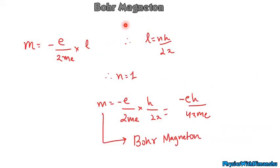Now, what is Bohr magneton? We have m = (-e/2me) × L, and L = nh/2π from Niels Bohr's hypothesis. Bohr magneton is the magnetic moment of the first orbit, so we put n = 1.